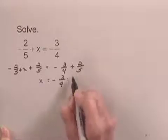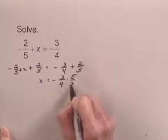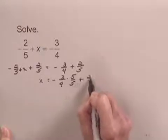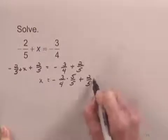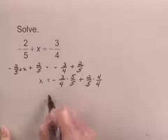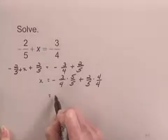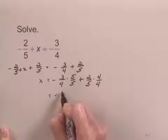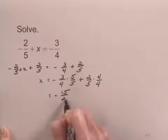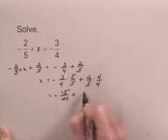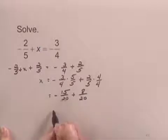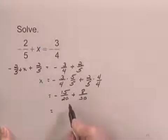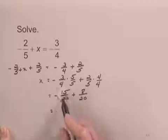To get a twenty in this denominator, I multiply by five over five. And to get twenty in the denominator of two-fifths, I can multiply by four over four. So this now is negative three times five, fifteen over twenty, plus two times four, or eight over twenty.